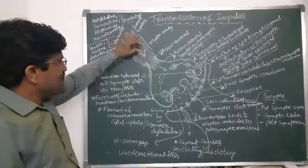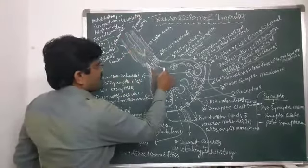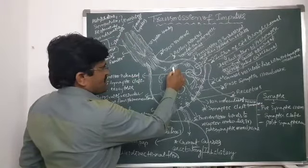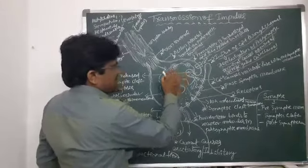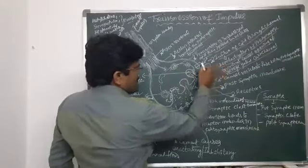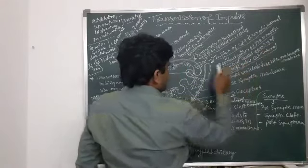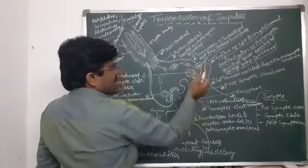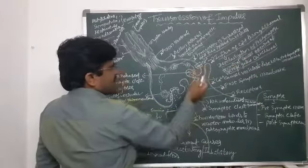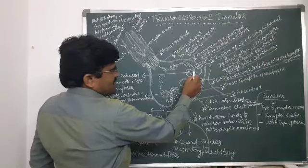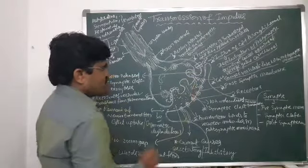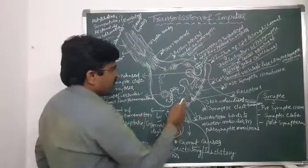Whenever the action potential reaches this area, the transmitters are synthesized and stored in the vesicles. Then the influx of calcium through the channels leads to depolarization of the presynaptic terminal, causing the opening of voltage-gated channels. This calcium then causes the vesicles to fuse with the presynaptic membrane.